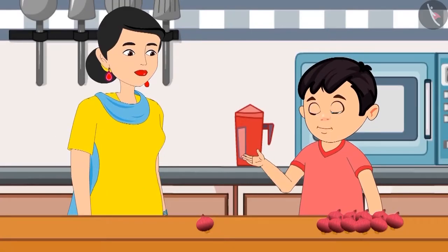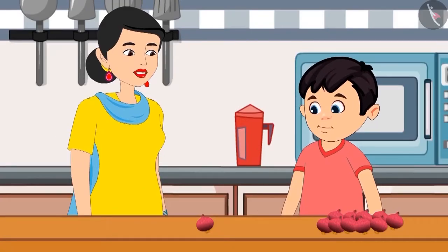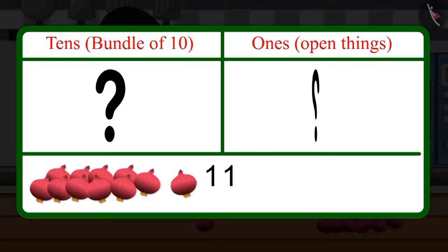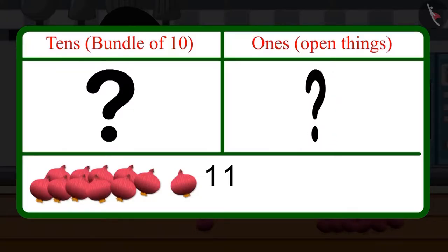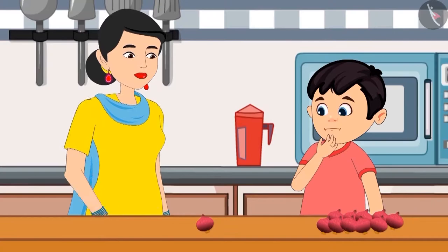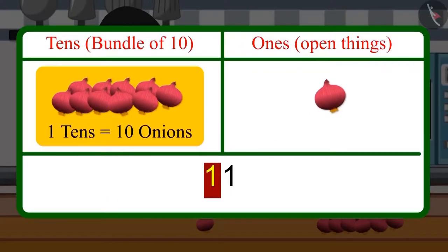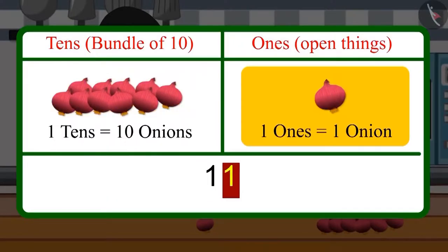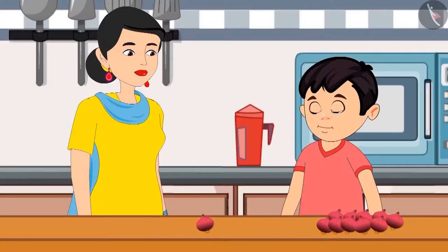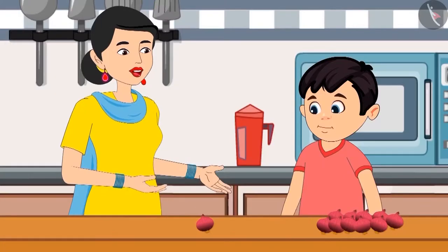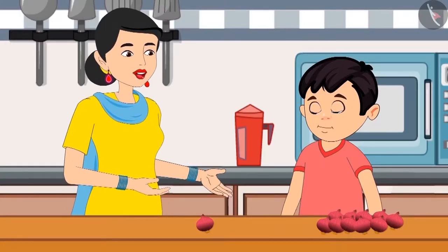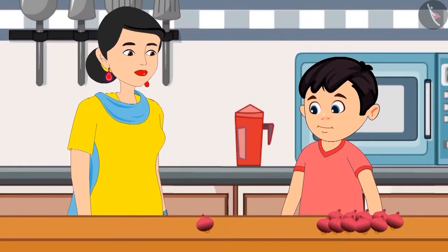Have you understood? Yes mummy. So now can you tell me how many tens and ones are there in 11 onions? There would be 1 ten and 1 one in 11 onions. Isn't it mummy? Yes Choto, you are absolutely right.